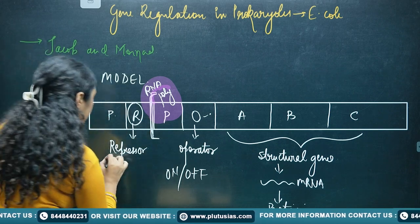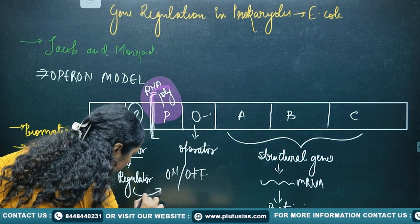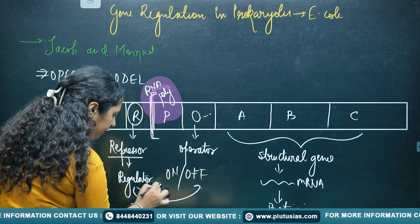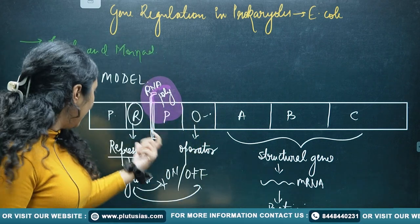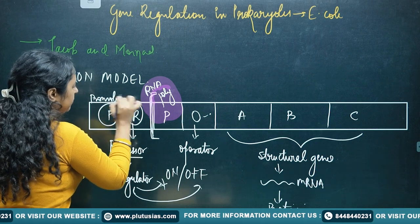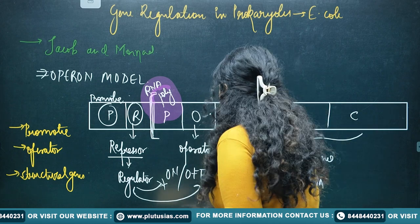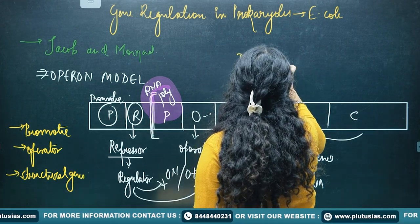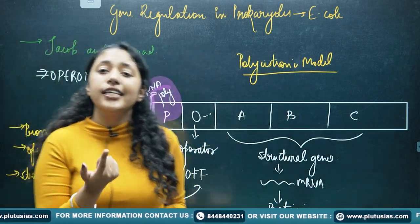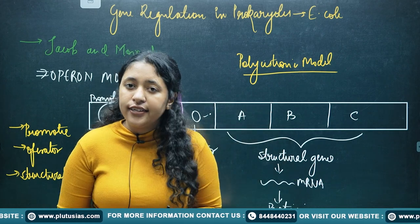If the repressor fails to bind to the operator, then the operator will be on. The repressor is also known as the regulator gene. As you can see, several genes are regulated by a single promoter — such a model is known as a polycistronic model. In prokaryotes, we generally see the polycistronic model, where many genes are regulated by a single promoter. This is not the case in eukaryotes, where it is single gene, single promoter.